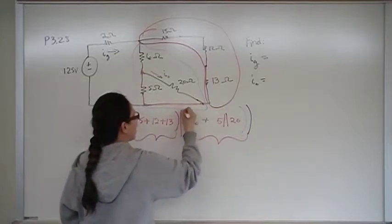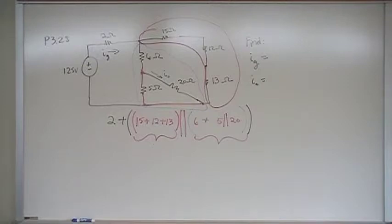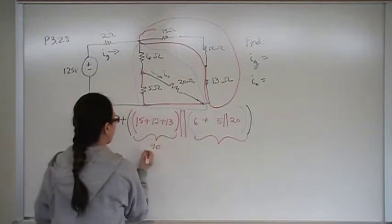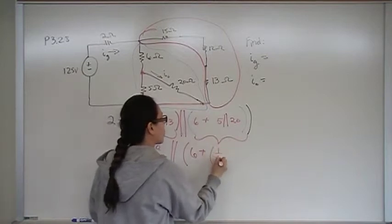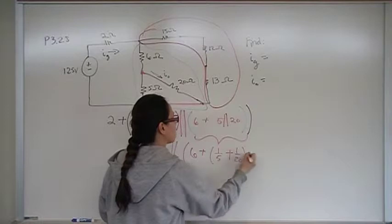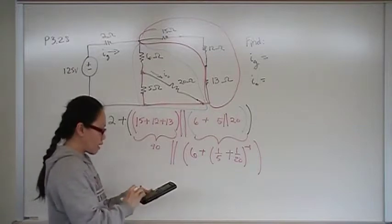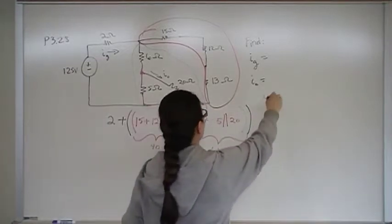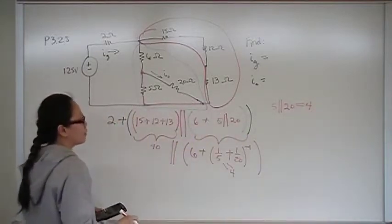This represents the blue branch, this represents the red branch, and they are in parallel with each other. So now let's add this together. 15 plus 12 plus 13 is 40. So this is going to be 40 in parallel with 6 in series with 1 over 5 plus 1 over 20. That's how you calculate that parallel: 1 divided by 5 plus 1 divided by 20. That gives me 4. So that's what that parallel branch is worth. I'm going to park that equation here: 5 in parallel with 20 is 4. We're going to come back to that. We need that for using current division.